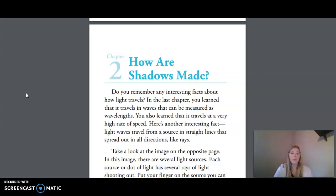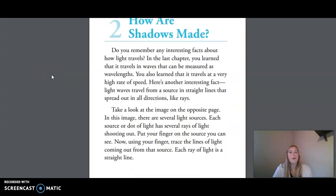We are now going to move into today's reading, which you can find in your small reader. Chapter 2, How Shadows Are Made. Do you remember any interesting facts about how light travels? In the last chapter, you learned that it travels in waves that can be measured as wavelengths. You also learned that it travels at a very high rate of speed. Here's another interesting fact: light waves travel from a source in straight lines that spread out in all directions, like rays.